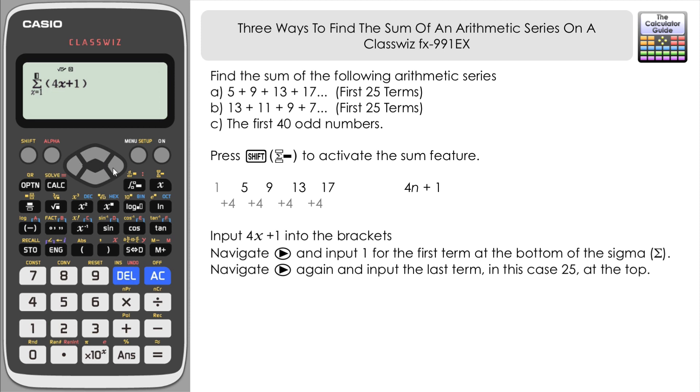We want the first 25 terms, so input 25. When ready, press equals, and here we have the sum of the first 25 terms: 1325.